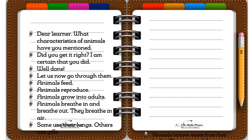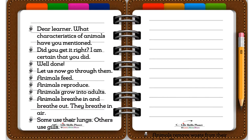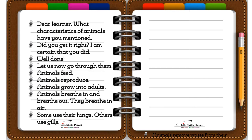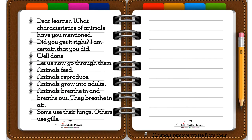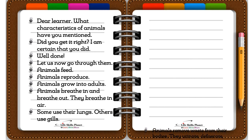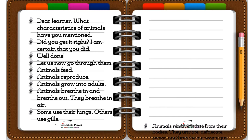Some use their lungs. Others use gills. Animals remove waste from their bodies. They urinate, defecate, sweat, and breathe out waste gas.